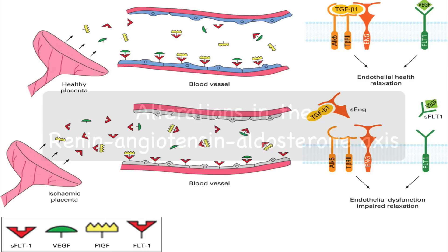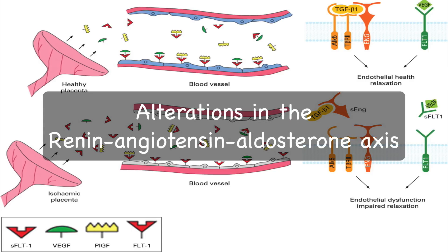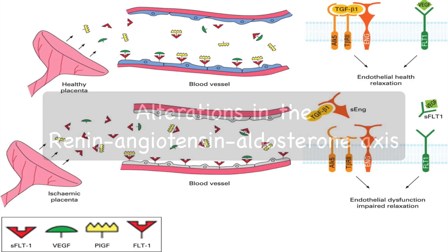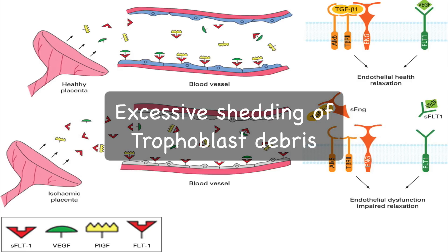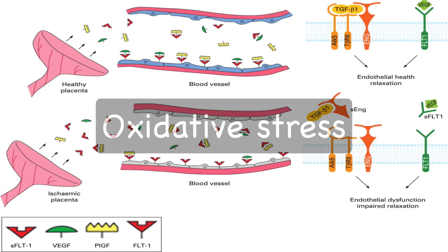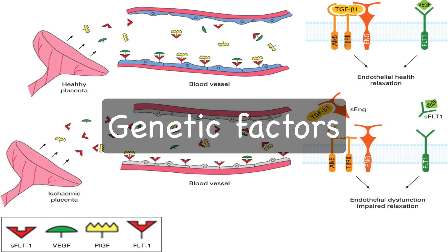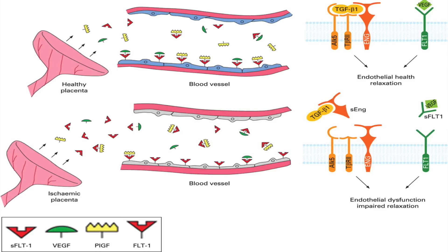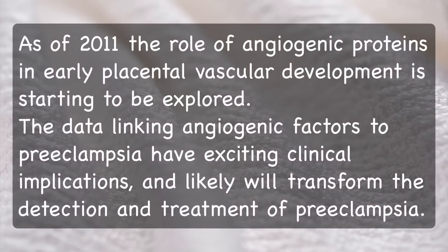Hypoxia is likely an important regulator. Other factors such as alterations in the renin-angiotensin-aldosterone axis, immune maladaptation, excessive shedding of trophoblast debris, oxidative stress, and genetic factors are likely to contribute to the pathogenesis of the abnormal placentation. As of 2011, the role of angiogenic proteins in early placental vascular development is starting to be explored. The data linking angiogenic factors to pre-eclampsia have exciting clinical implications and likely will transform the detection and treatment of pre-eclampsia.